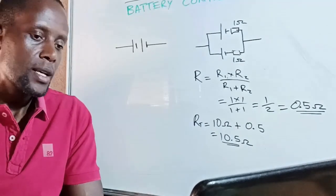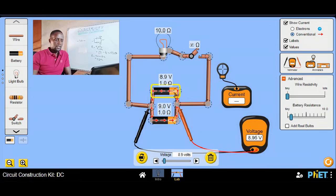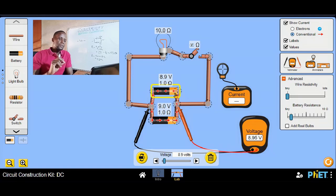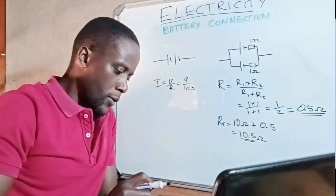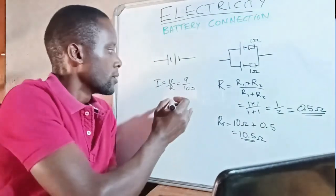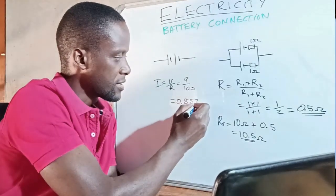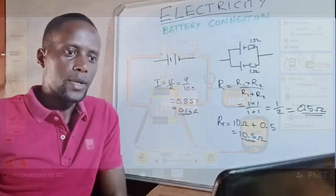The increased total resistance will affect the current in the circuit. Our current reads zero because the switch is open, but once we close it we'll get a different current than before because resistance has increased. Current equals voltage over resistance: nine volts divided by 10.5 ohms. Working that out on the calculator, we should expect a current of approximately 0.86 amps.